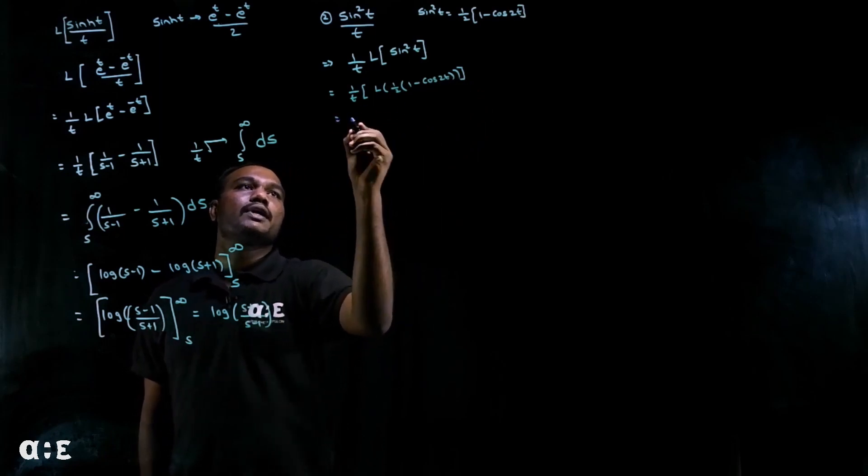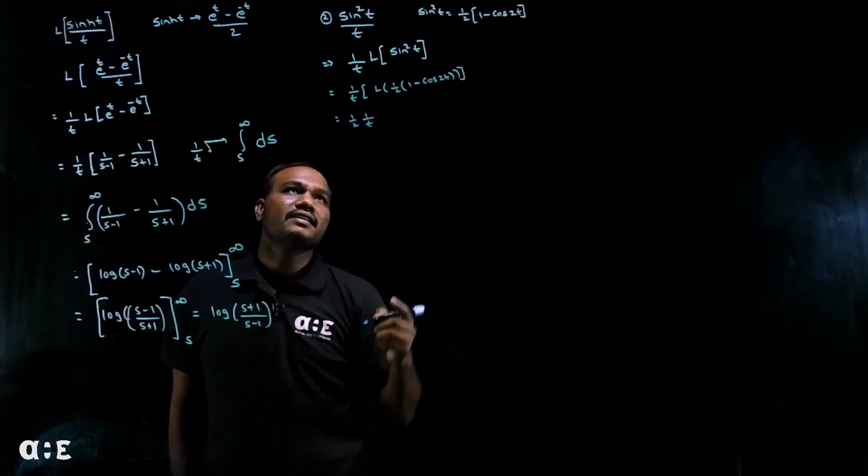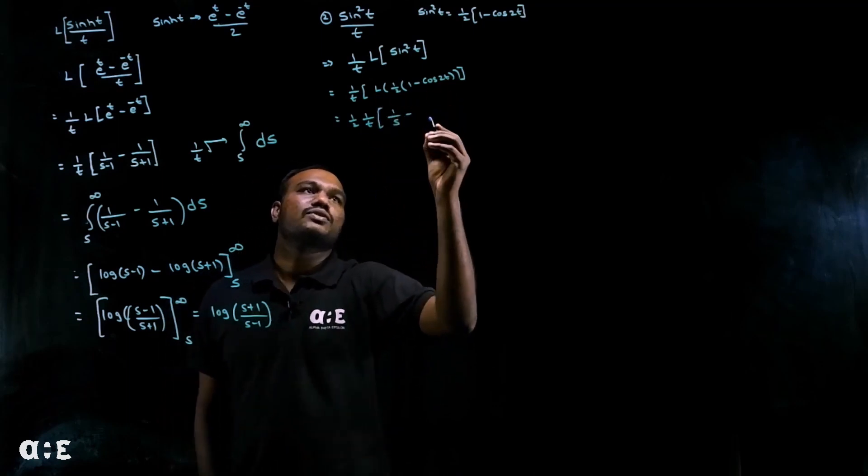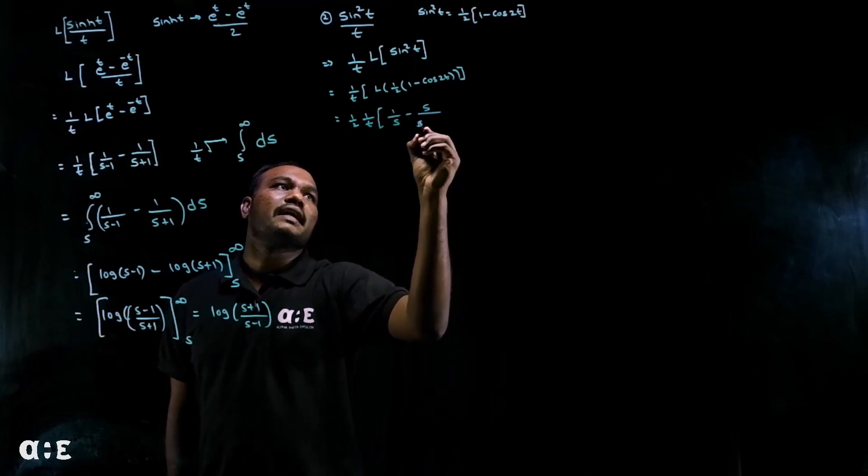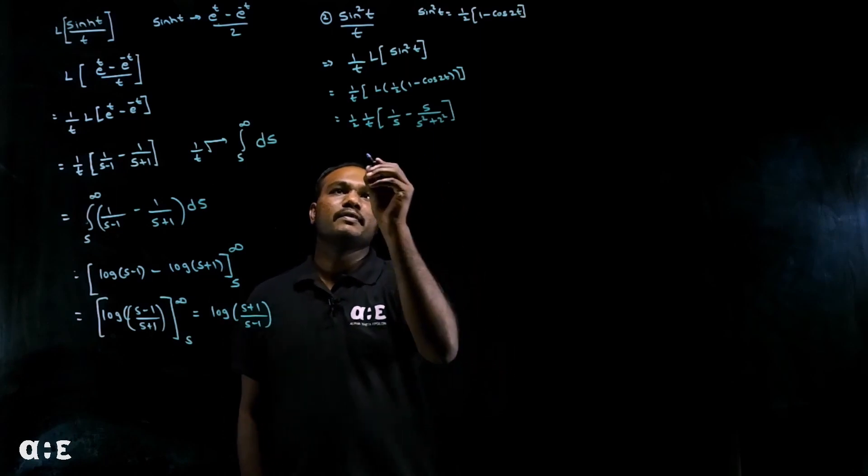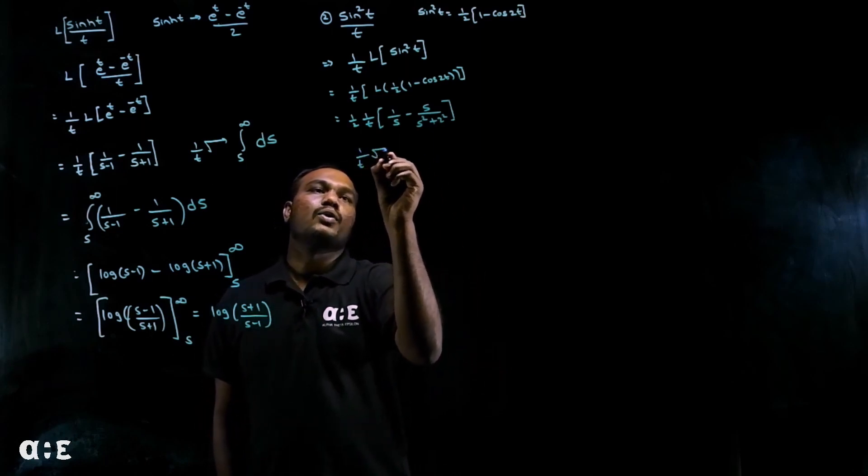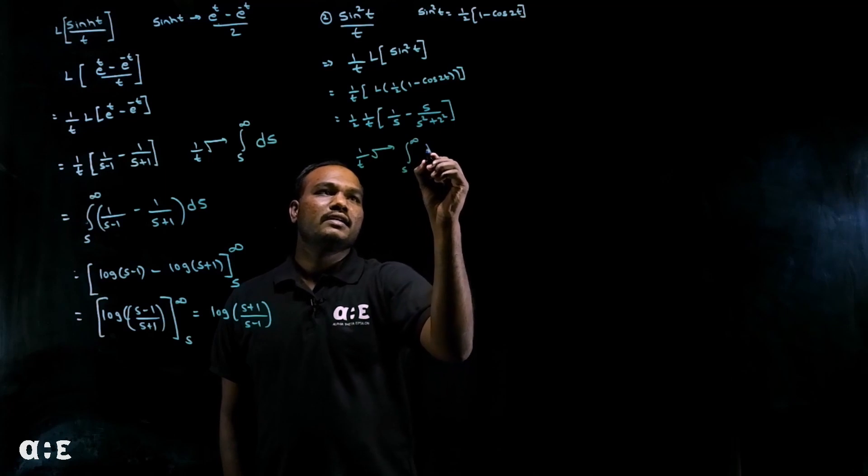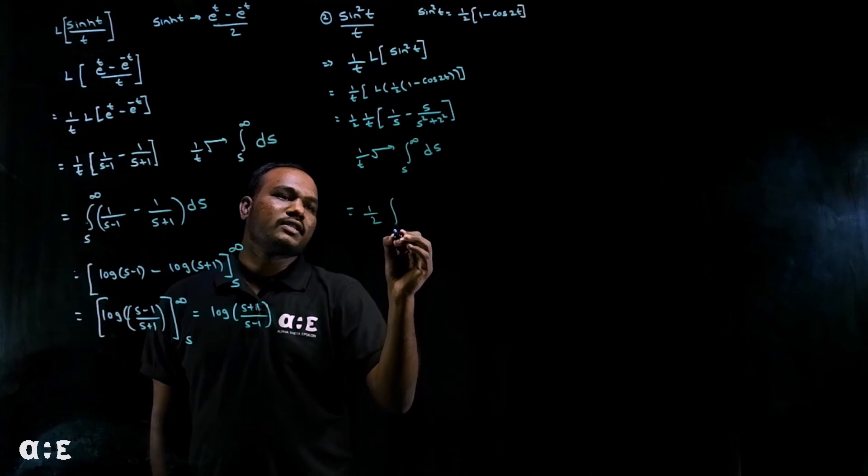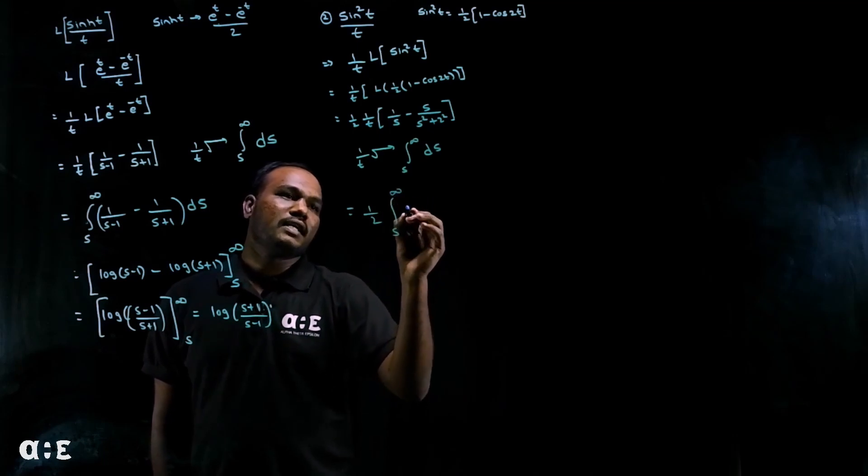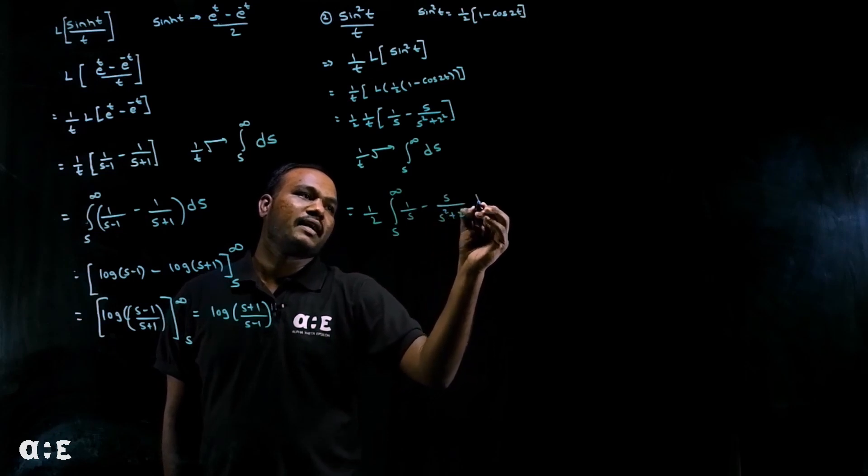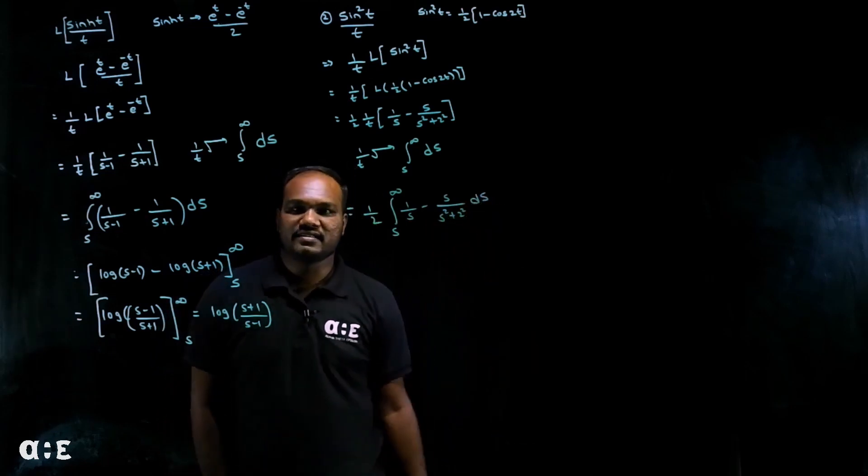Next, one by two I'll take it out and one by t I'll keep as it is. Laplace of one is one over s minus Laplace of cos 2t, which is s upon s square plus 2 square. Next I need to eliminate one by t by integrating from s to infinity with respect to ds. So we have one by two integration from s to infinity: one over s minus s upon s square plus 2 square, integrated with respect to ds.